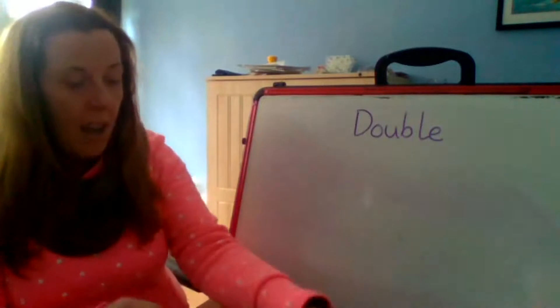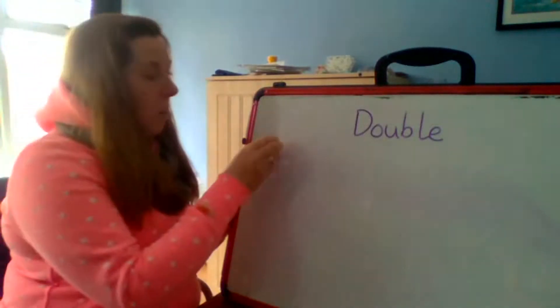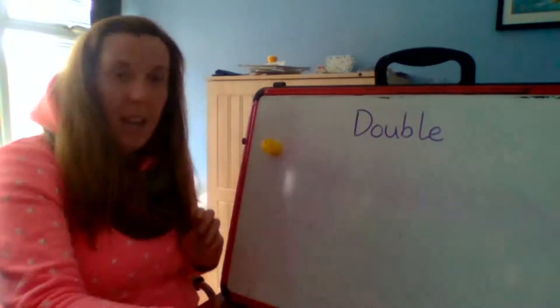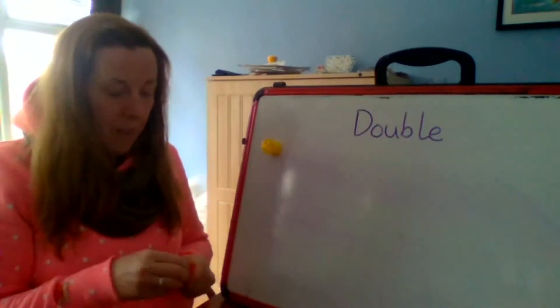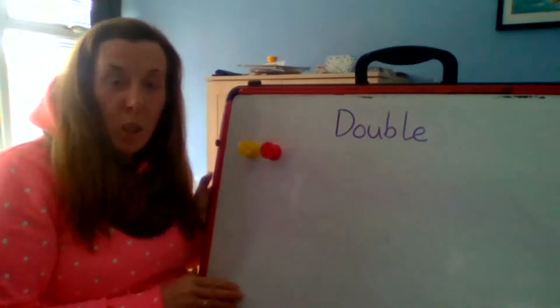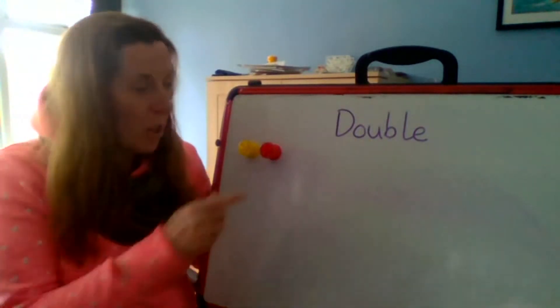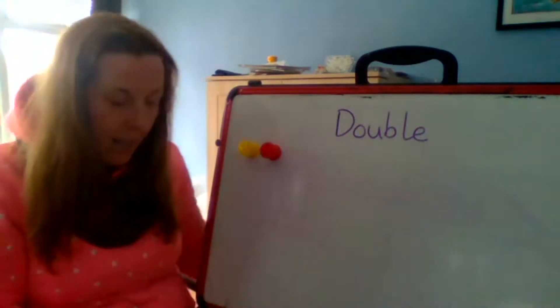So if I have here, I have two cotton reels and I'm going to stick them to my board here. So I've got one and I have another one. Two. So if I have two here and I want to double it, what do I need to do? I need to add another two. So I need to add the same number again.